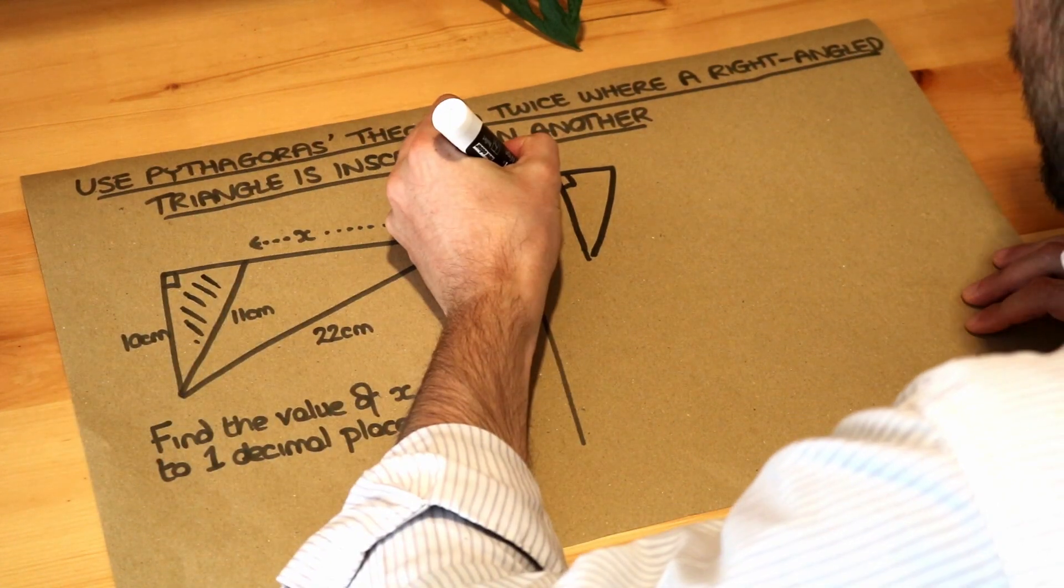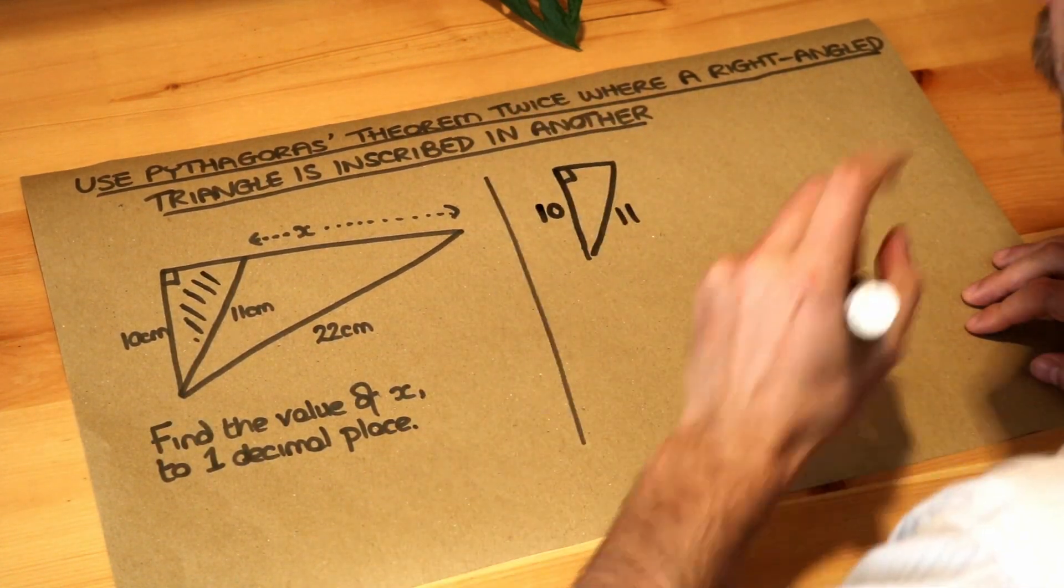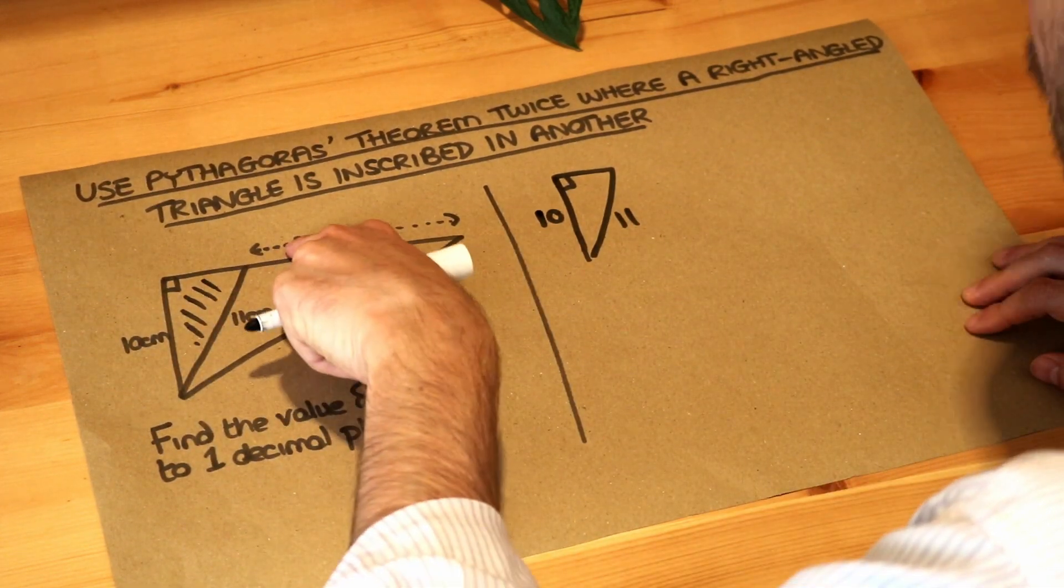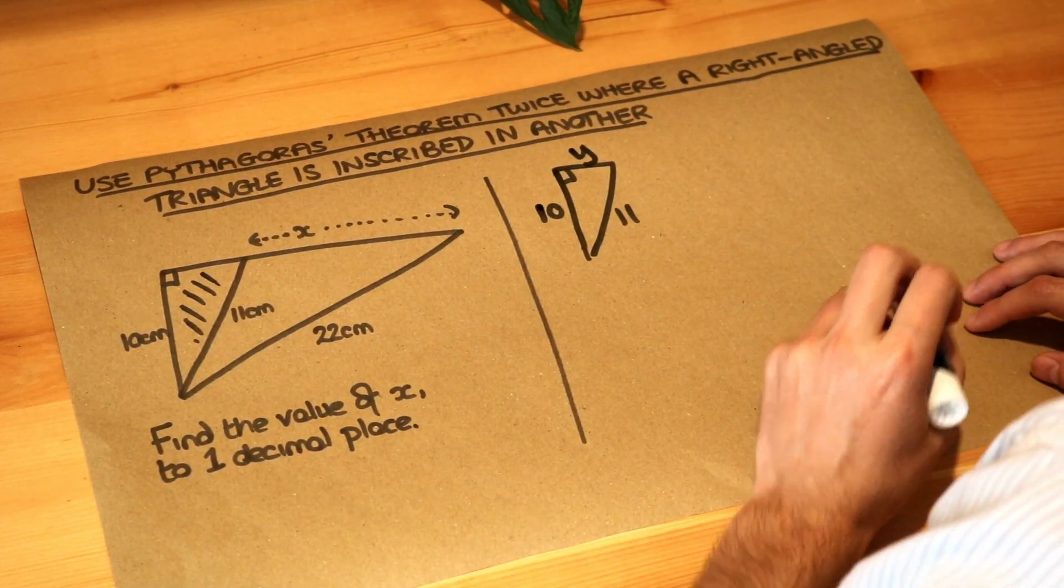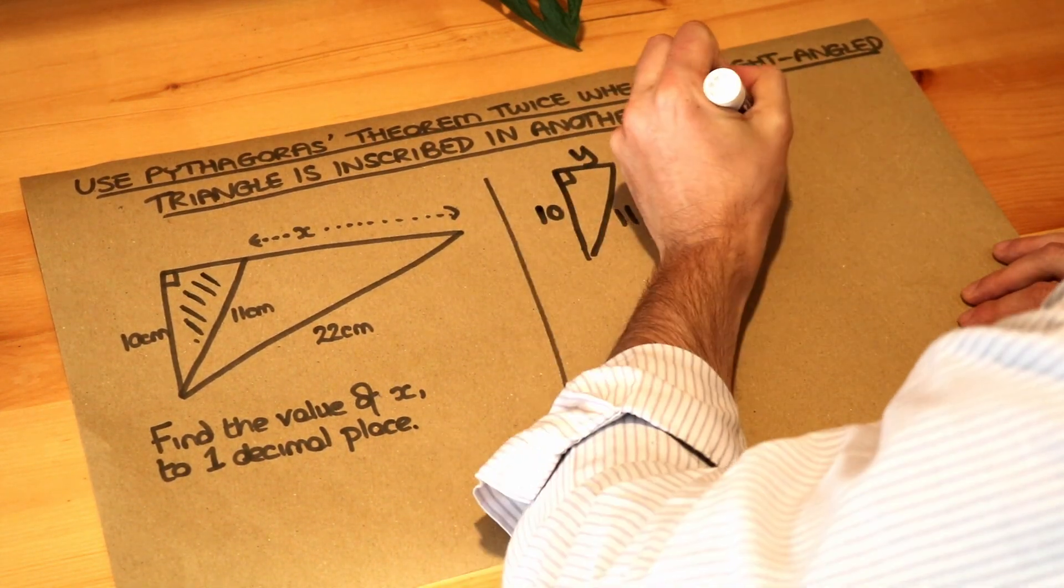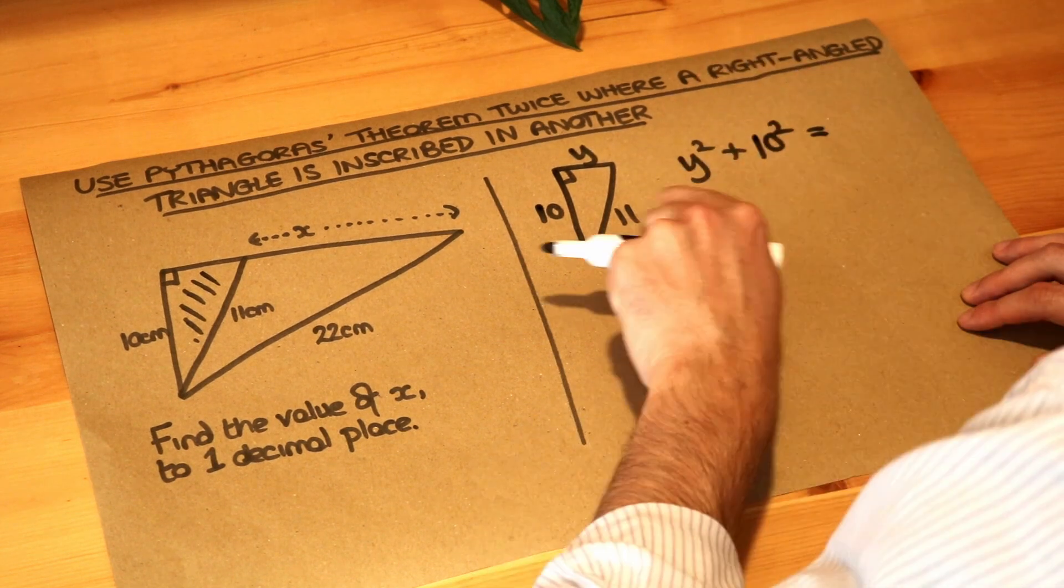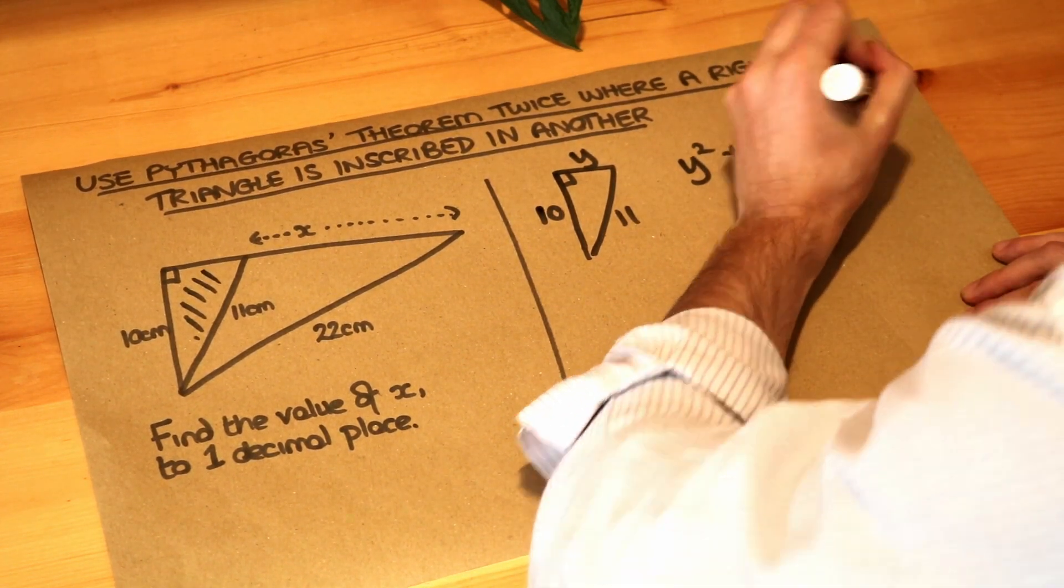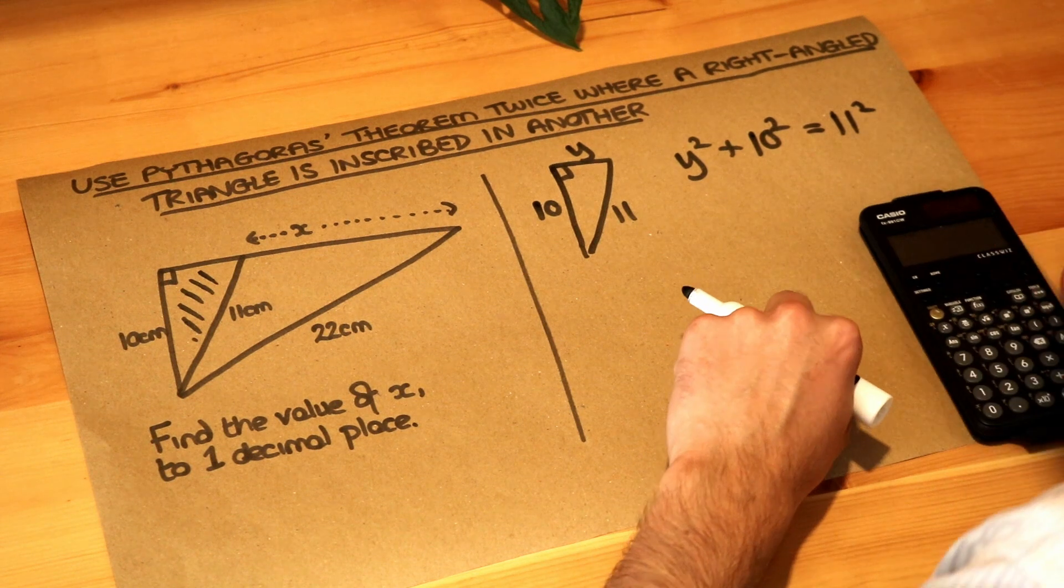We've got 10 here and we've got 11 here and let's just call this length, well we've already used x so call it y. Now Pythagoras theorem is one of the shorter length squared plus the other shorter length squared is equal to the hypotenuse squared and I'm just going to do this quickly because we've done Pythagoras many times.